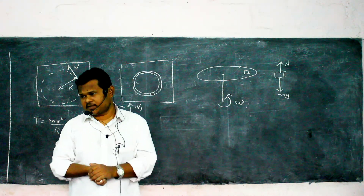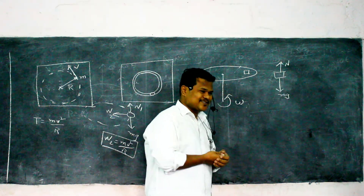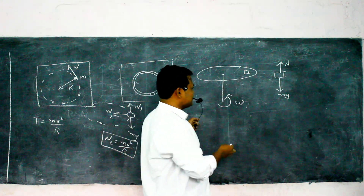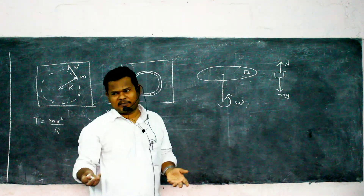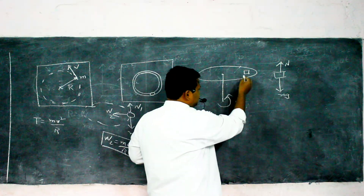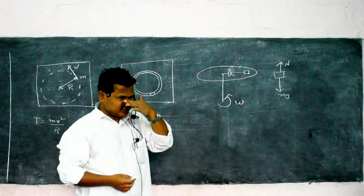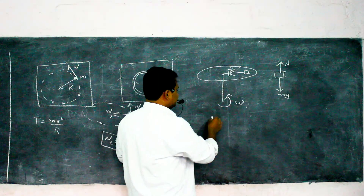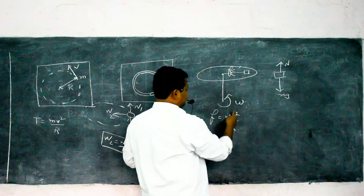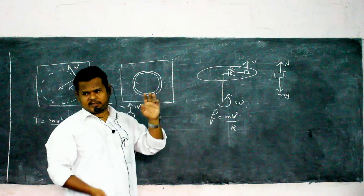Friction provides the centripetal force in this condition. If the block is moving along with the table, there must be friction between the table and the block. So F = MV²/r, where r is the distance from the center.